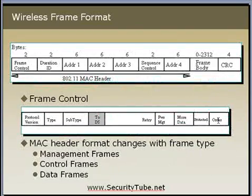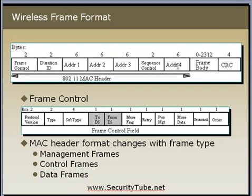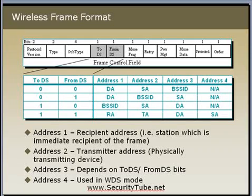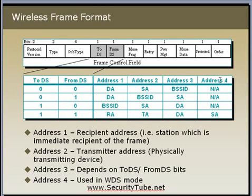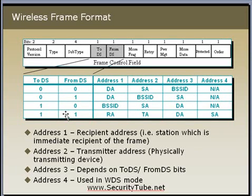Next come four address fields: Address 1, Address 2, Address 3, and Address 4, along with a Sequence Control field. The exact content of these address fields depends on the To DS and From DS flags. When both To DS and From DS are reset to 0, Address 1 is the destination, Address 2 is the source, Address 3 is the BSSID, and Address 4 is not applicable. Address 4 is only used in WDS mode when both To DS and From DS are set to 1.